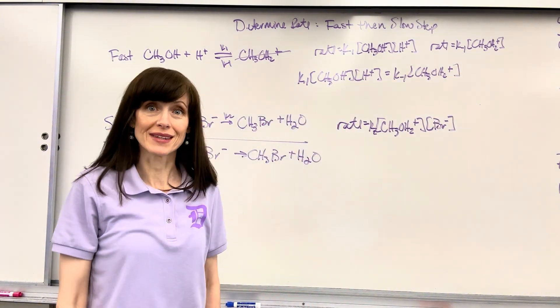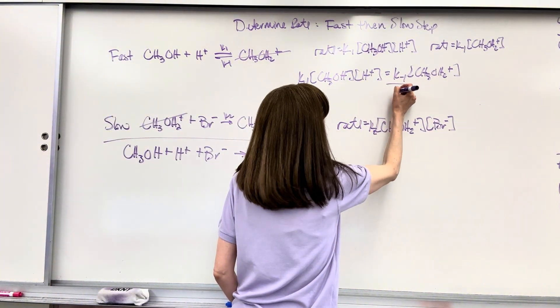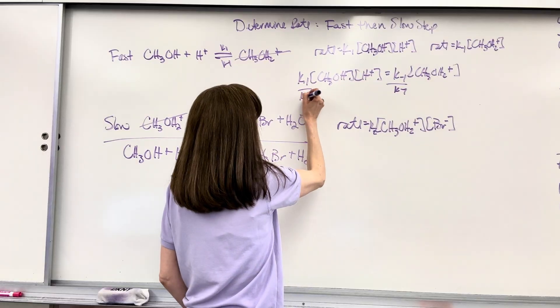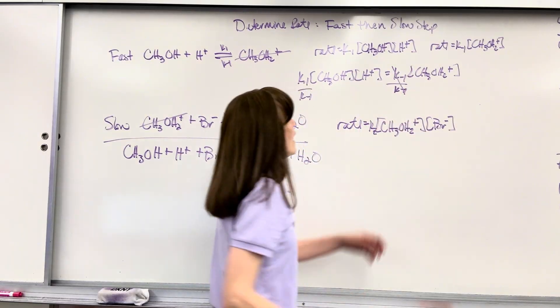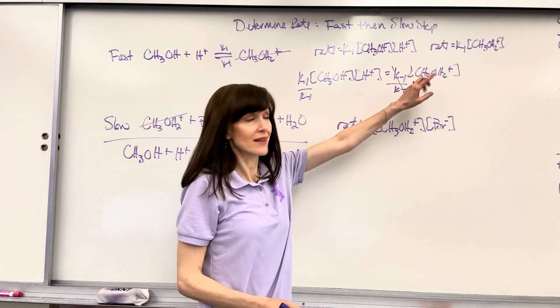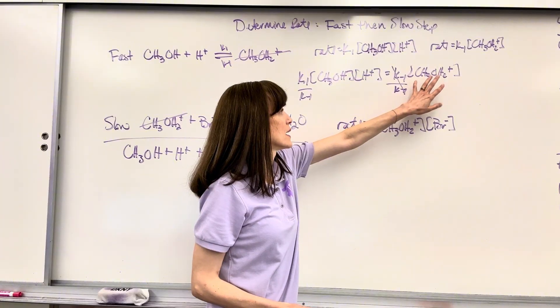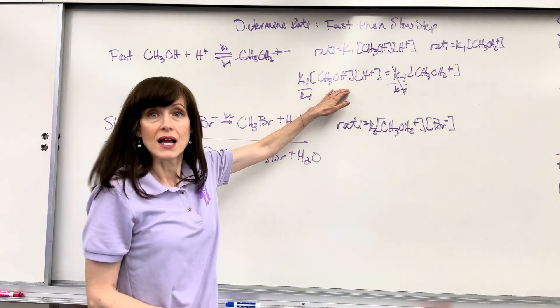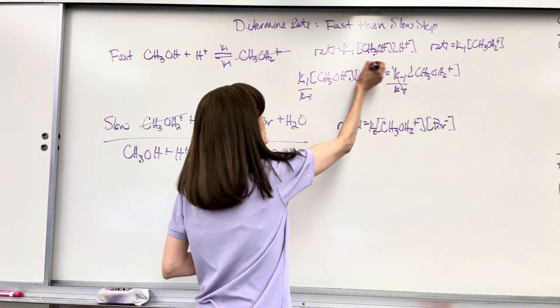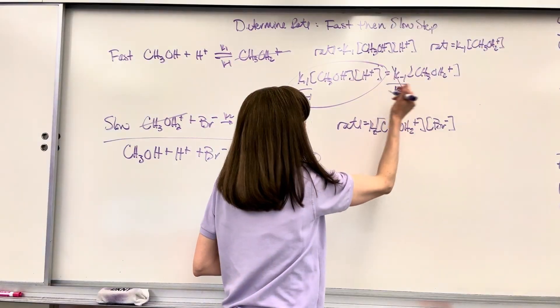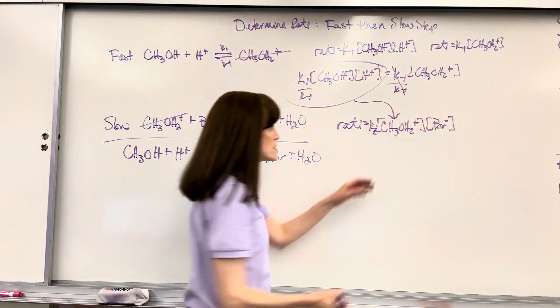Now I solve for the intermediate. I divide both sides by K-1. I can now take that intermediate and substitute this equals the intermediate. So I substitute it right there.